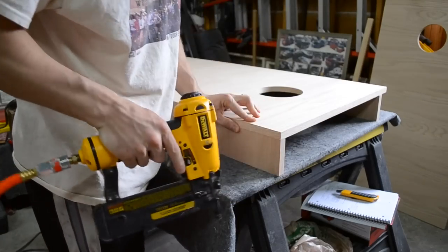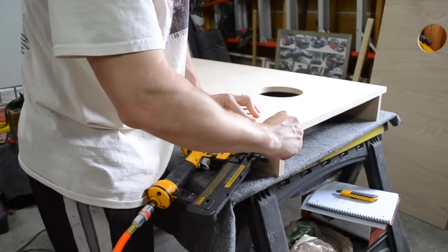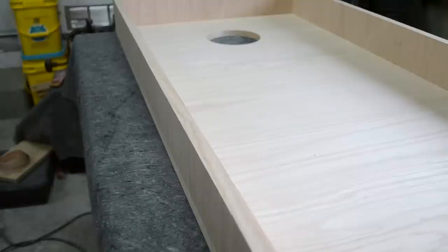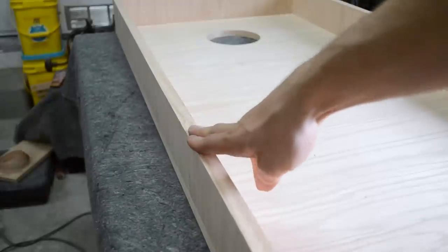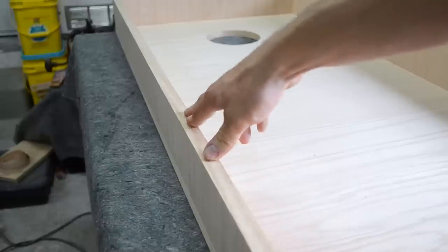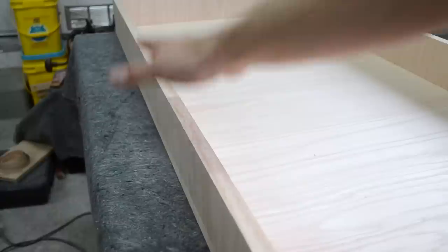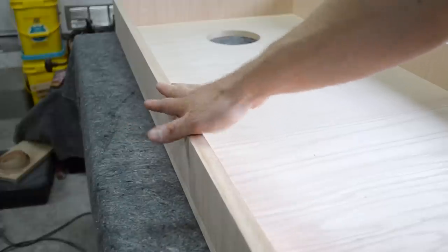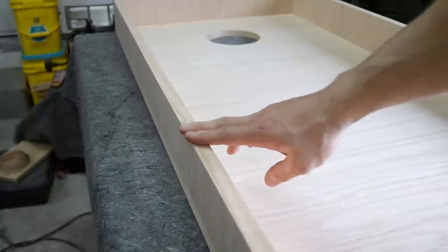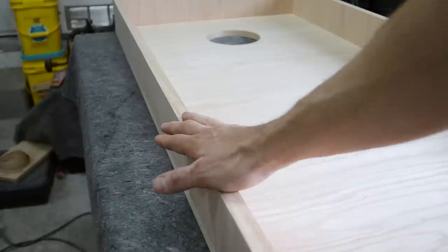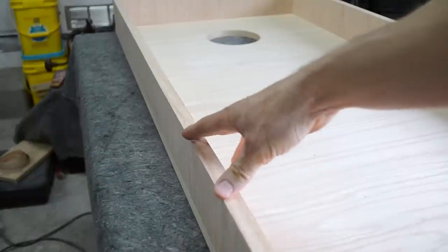I'm going to be using inch and a half brad nails to secure it. One thing that I did which a lot of people will overlook is on the bottom, instead of having the plywood open end with all the different layers exposed that could potentially not fully seal and be sitting on the ground, I actually put the veneer down here to help seal off the open end of the wood. This way when I finish it I'll have a good solid finish that will help resist any water from absorbing up into the actual board itself.